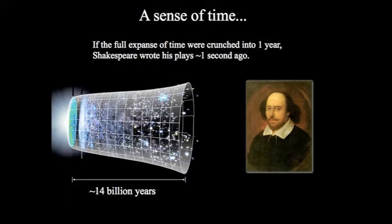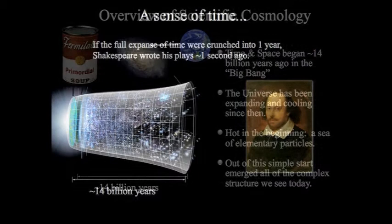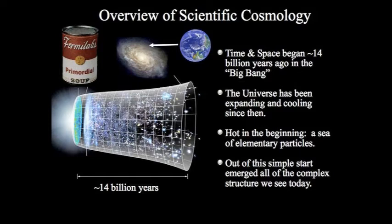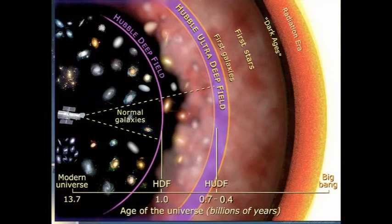Just to put some of that 14 billion years in perspective: if the full expanse of time, 14 billion years, were stretched down to one year, then ratio-wise Shakespeare wrote his plays one second ago. That blue-green picture is actual data mapped from the COBE satellite, the Cosmic Microwave Background Explorer. The principal investigator who designed the COBE spacecraft and was able to map this early microwave radiation — essentially weigh the universe — is now the lead scientist for NASA's James Webb Space Telescope.